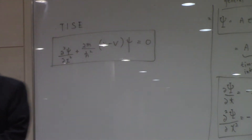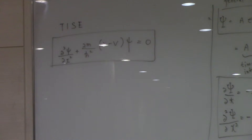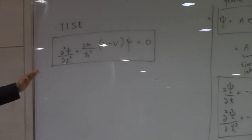If you separate psi into time-dependent and time-independent terms, it is not difficult to derive the time-independent Schrödinger equation: ∂²psi/∂x² + (2m/h-bar²)(E − V)psi = 0. That is the time-independent Schrödinger equation. Schrödinger deserved the Nobel Prize just for this derivation — it's amazing.